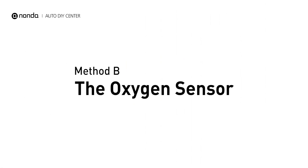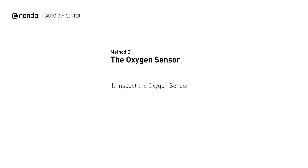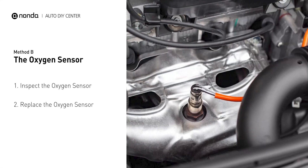Method B: the oxygen sensor. Oxygen sensors are mounted directly onto the exhaust pipe near the catalytic converter. Locate the sensor that responds too slowly as it ages.